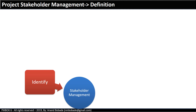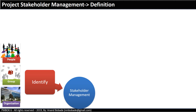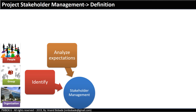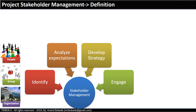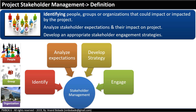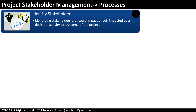Let's look at the project stakeholder management knowledge area definition. This knowledge area deals with identifying people, groups, or organizations that could impact or be impacted by the project. It involves analyzing stakeholder expectations and their impact on the project, and developing appropriate stakeholder engagement strategies so that you can engage stakeholders effectively throughout the project. The first process is Identify Stakeholders, which is part of the initiating process group. This is the process of identifying stakeholders that could impact or get impacted by a decision, activity, or outcome of the project.